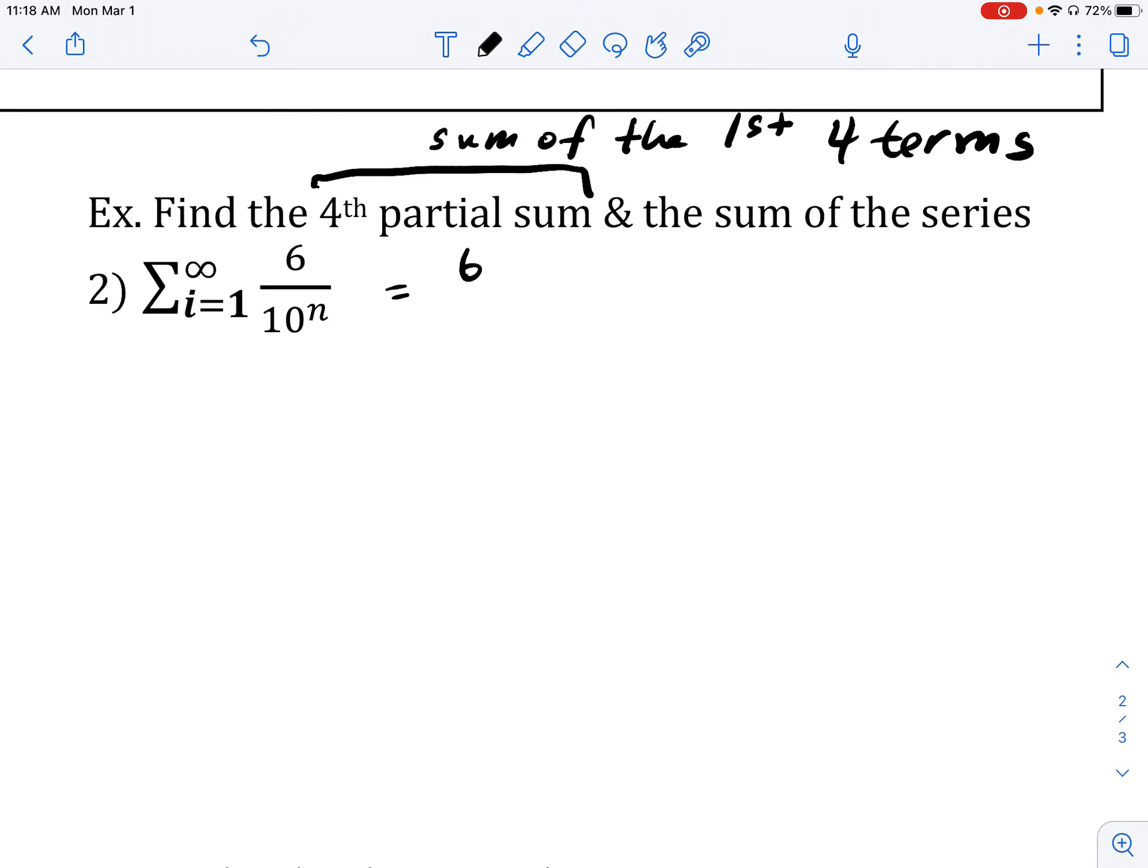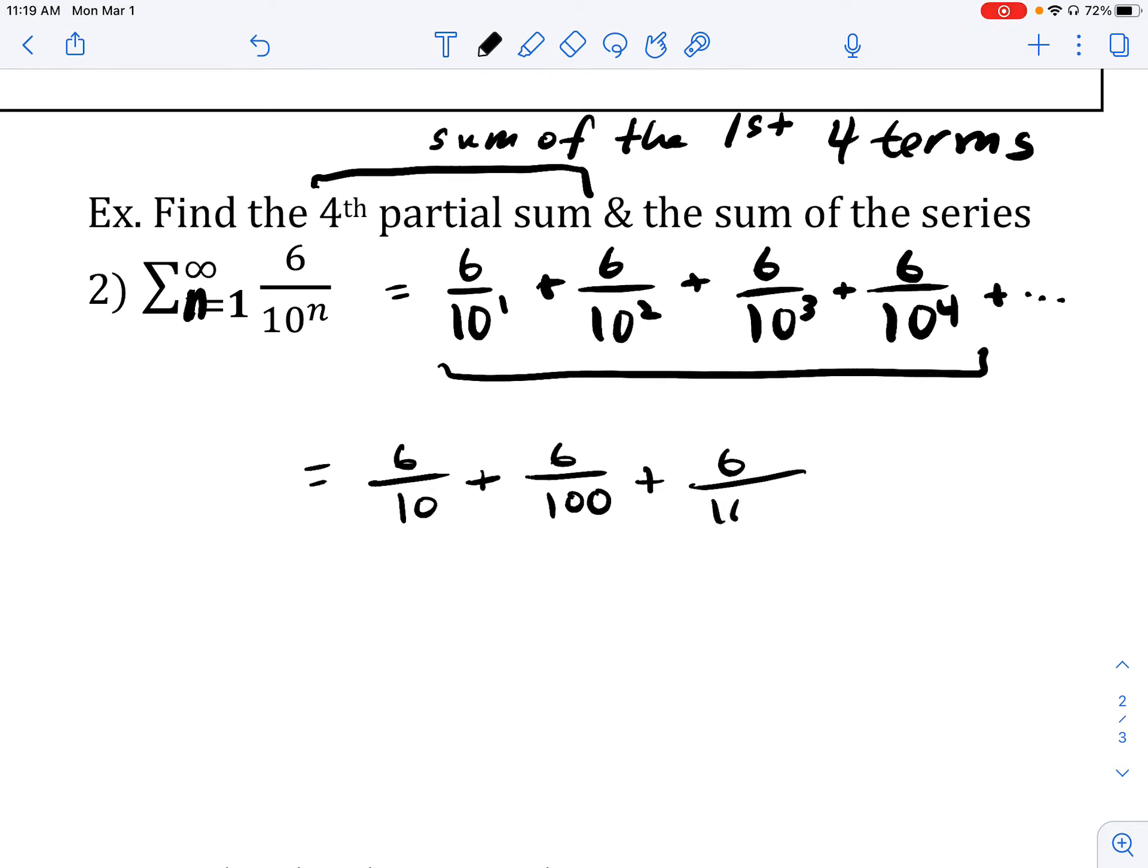So let's write that out. So what are the first four terms of this series look like? Well, when n is equal to 1, this would be 6 over 10 to the 1. When n is equal to 2, this is 6 over 10 squared, 6 over 10 cubed, and so on. So this is an infinite series, so this is going to go on infinitely. But I'm concerned right now with just finding the sum of the first four terms.